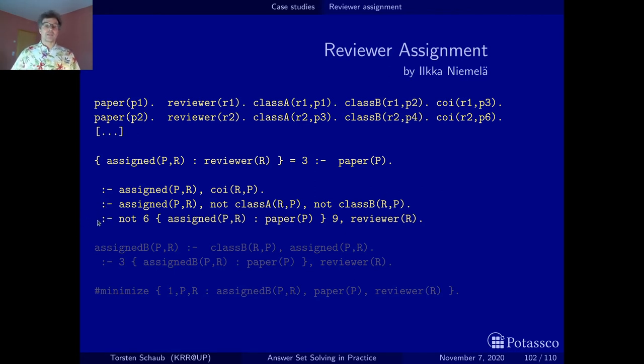The last integrity constraint more or less says you should give between six and nine papers to each reviewer. So each reviewer should review at least six and at most nine. Keep in mind whenever there is a not, since it's the integrity constraint, it must not be the case and then you have a negative condition. You can just read this by reading this condition here. So you have a reviewer and the reviewer gets assigned between six and nine papers.